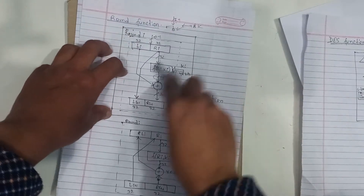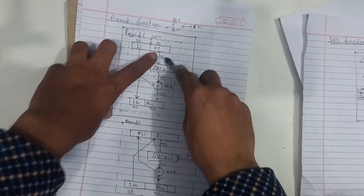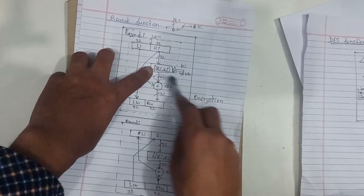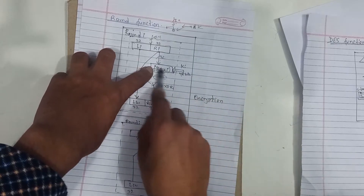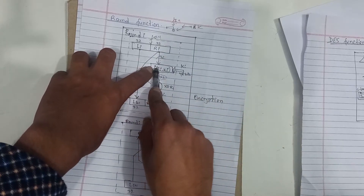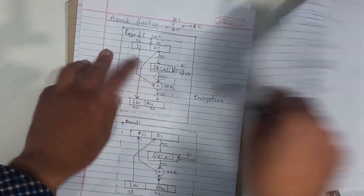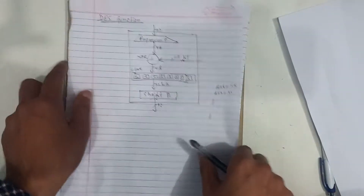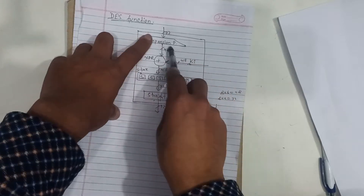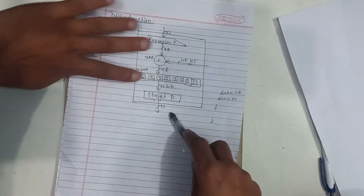The DES function uses a 32-bit input and a 48-bit key, then produces a 32-bit output. This is the DES function.